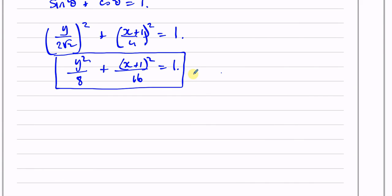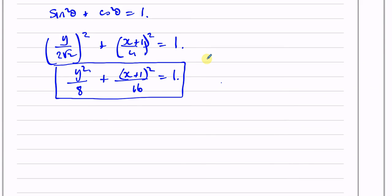Other questions from this end of topic worksheet on parametric equations can be found in the playlist shown here. Other questions from the Solomon B paper for C4 can be found in this playlist. If you'd like to subscribe to my channel, click this link. Thank you for watching and see you soon.